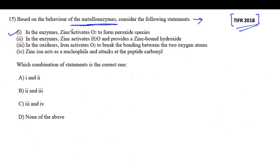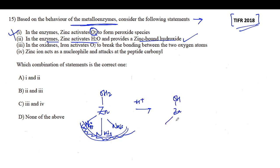Another question, TIFR 2018, on bioinorganic. Based on the behavior of the metalloenzymes, consider the following statements. Let's see: In the enzymes zinc activates oxygen to form peroxide species. The role of zinc is mostly seen in carboxypeptidase, carbonic anhydrase; there it is not activating oxygen. This will be wrong. In the enzyme zinc activates water and provides a zinc bound hydroxide. This is absolutely correct because zinc is tetrahedrally bound to an egg-like shell of protein of the amino acid from the N-histidine units and histidine residues of the proximal amino acids.